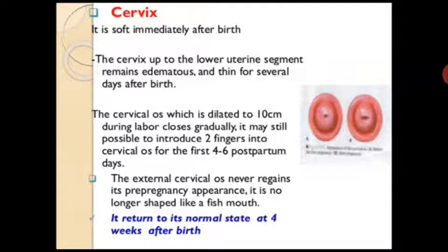The cervix is soft immediately after birth. The cervix up to the lower uterine segment remains edematous and thin for several days after birth. Even a few days after delivery, two fingers can still be inserted into the cervix; later the cervix becomes narrow and only a fingertip can be inserted. It takes a long time — about six weeks — for the cervix to regain its structure. The external os never returns to its nulliparous appearance in multiparous women.